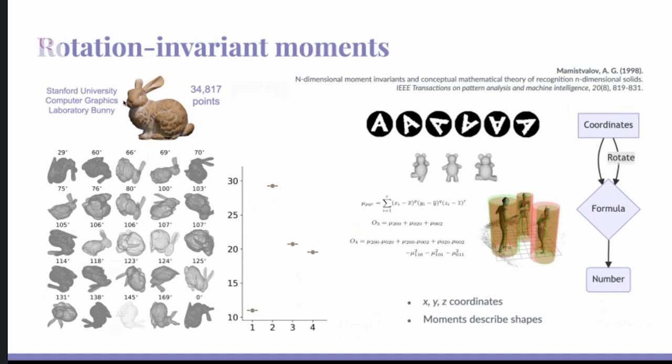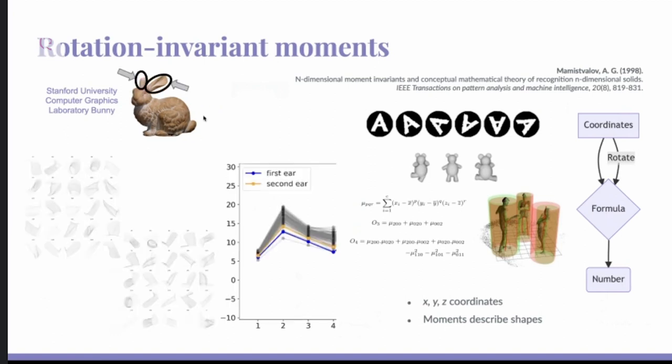And so here's an example with this big bunny. It has a lot of points, and you can rotate it in many different ways, but you'll see that these four moment invariant formulas all have exactly the same value for all of these rotations. And so what will be interesting, of course, is to use this in a search sort of situation, or in a way of actually describing a fragment.